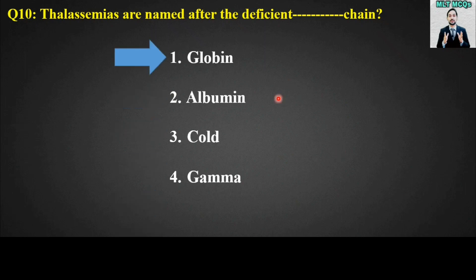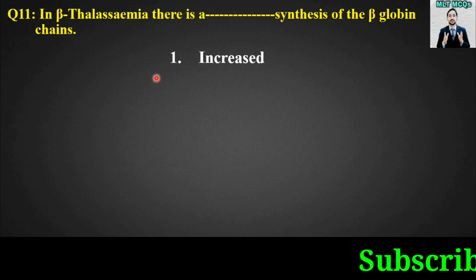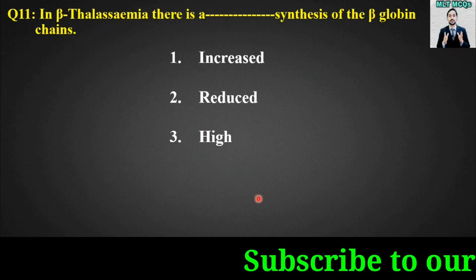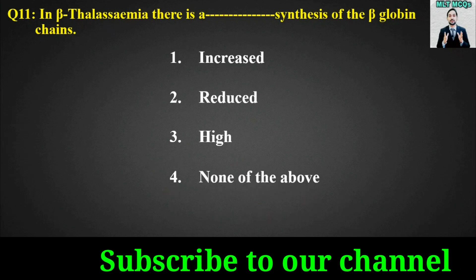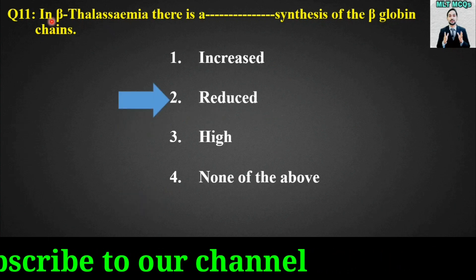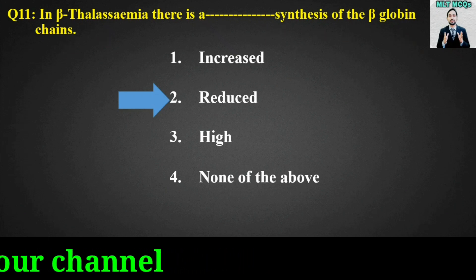MCQ number eleven: In beta thalassemia there is a blank synthesis of the beta globin chains. Options are: increased, reduced, high, or none of the above. The right answer is option number two — reduced. In beta thalassemia there is reduced synthesis of the beta globin chains.